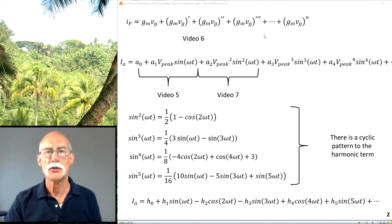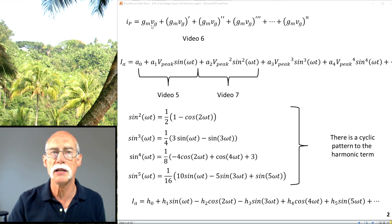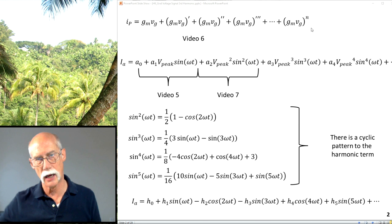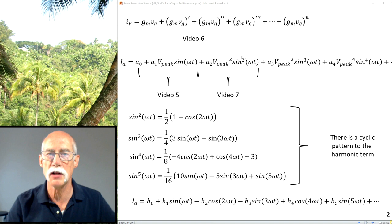So in video 6 we talked about that the IEP instantaneous plate current is equal to a derivative expression gm*vg, which is sine omega t, and we can take the first, second, third, fourth derivative in order to calculate our harmonics. I've covered the fundamental in video 5. Video 7 I covered the second harmonic. Today I'm going to spend some time on the third harmonic.